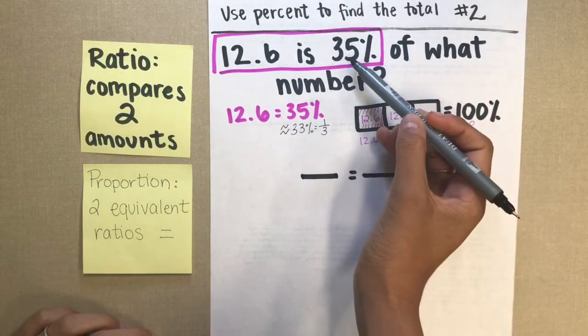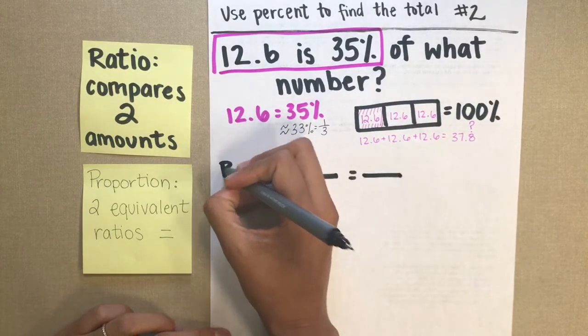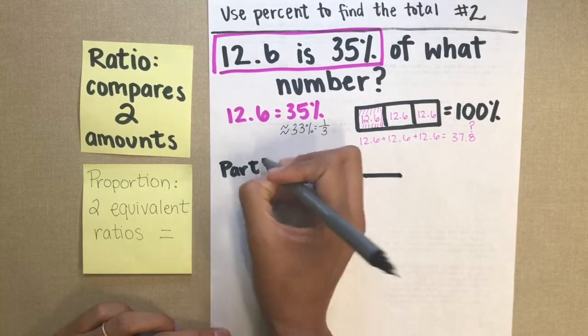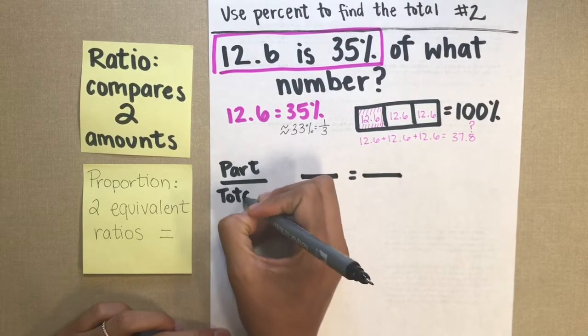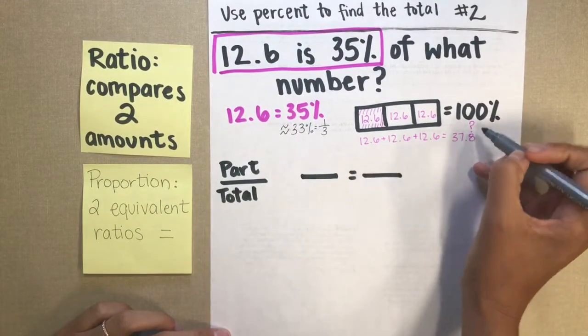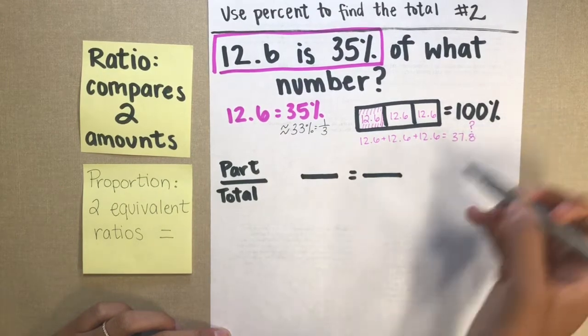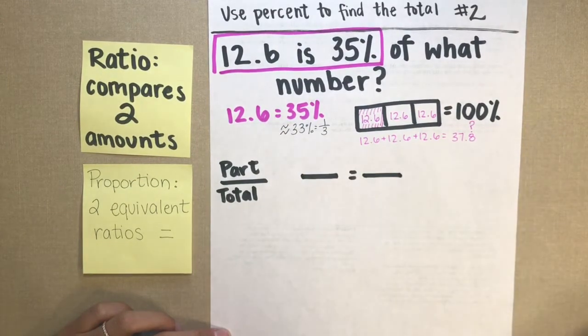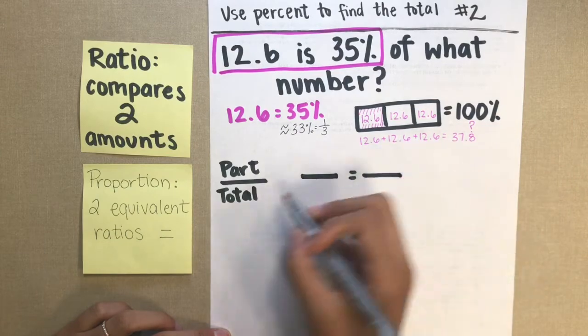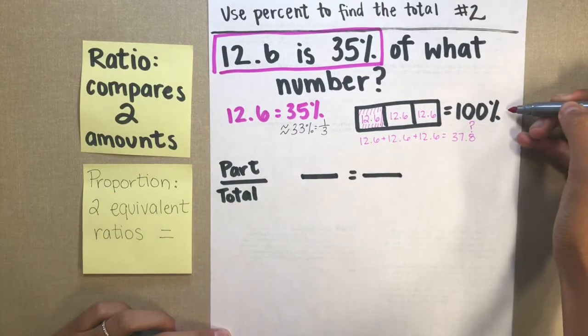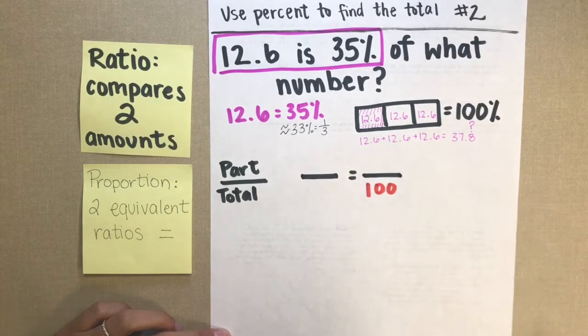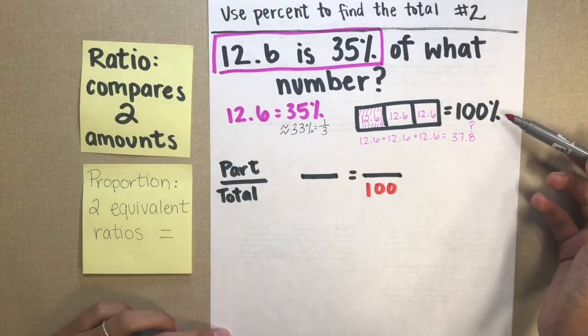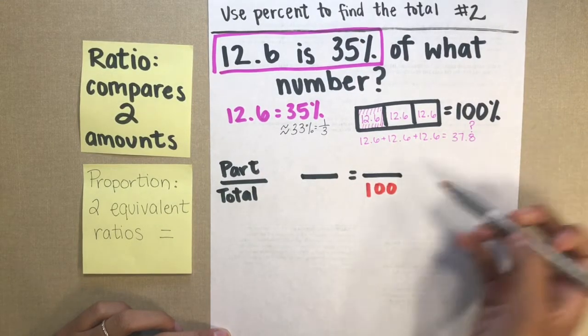In this case, I have a part 35%. And I'm comparing that to a total 100% or that number that I don't know. So let's start by filling in what we know. I know that the total amount in a percent is always going to be 100. Because a percent is always out of 100.